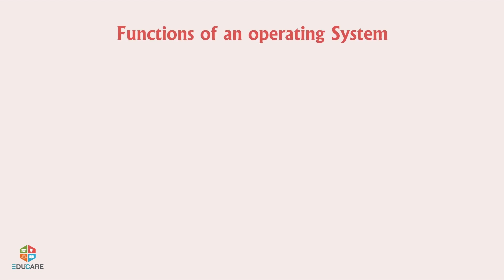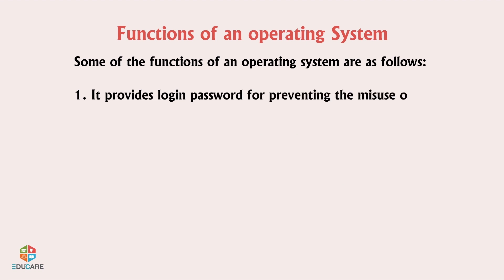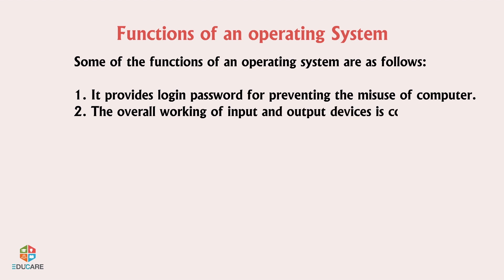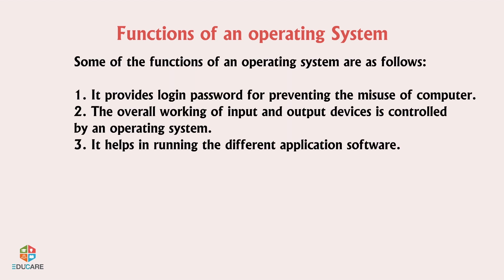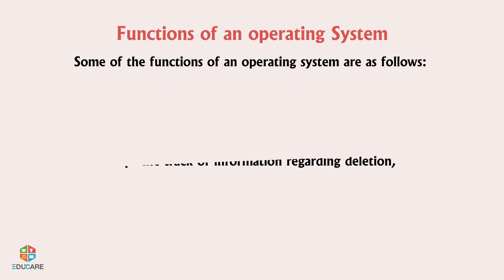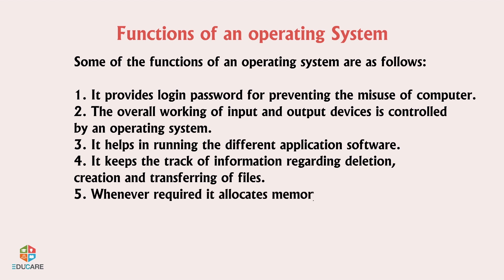Functions of an operating system: It provides a login password for preventing the misuse of the computer. The overall working of input and output devices is controlled by an operating system. It helps in running different application softwares, keeps track of information regarding deletion, creation, and transferring of files, and allocates memory to different programs when required.